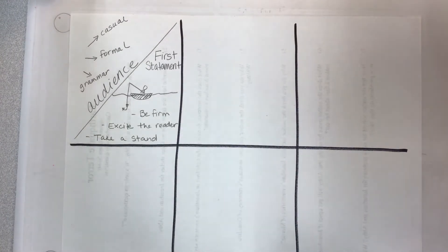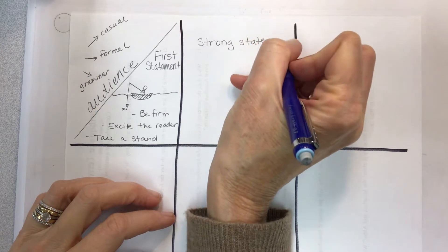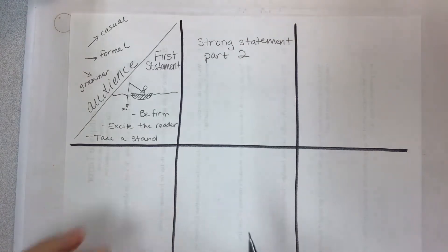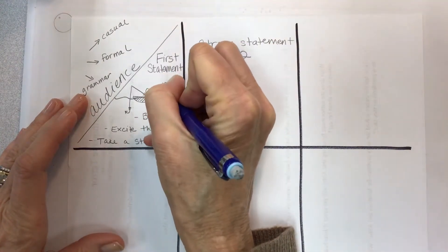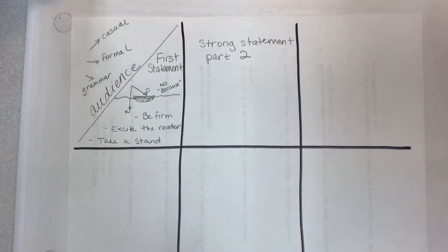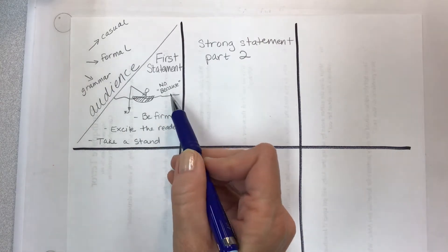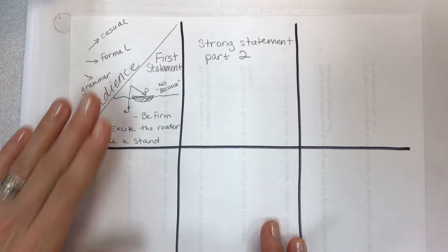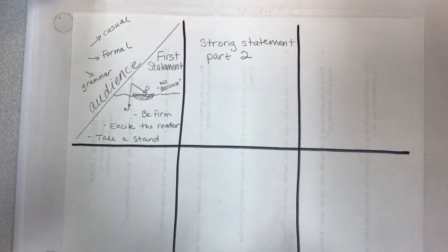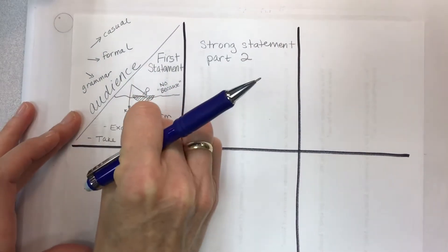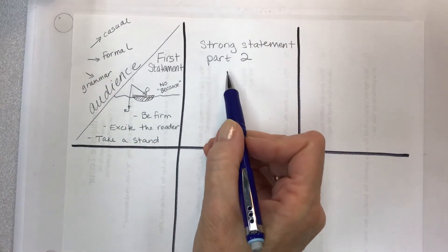What is this box for? This is going to be your strong statement part two. Strong statement. In your opening paragraph you can't just say one thing and then leave it. Also, you do not want to say because. Do not say because in your very first statement. Don't say I think dogs are the best pets because they lick my face when I come home. Do not give reasons in your first statement. You want to say what your opinion is and leave it. Say it and leave it. Take a stand. Dogs are the best pets ever.